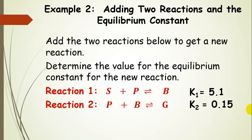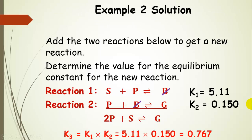Now let's look at adding two reactions together. Reaction one has an equilibrium constant of 5.1, and reaction two has an equilibrium constant of 0.15. Adding those two reactions together gives us 2P plus S in equilibrium with G. To get the new equilibrium constant, we multiply K1 and K2, giving K3 equal to 0.767.